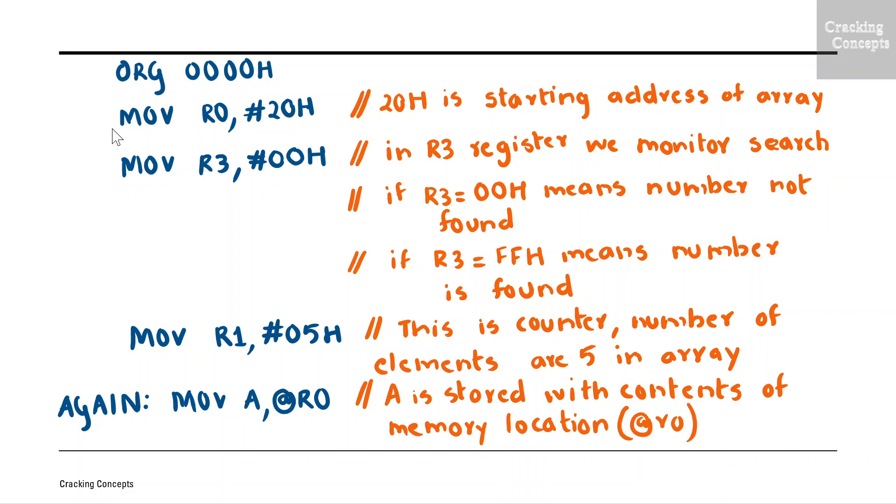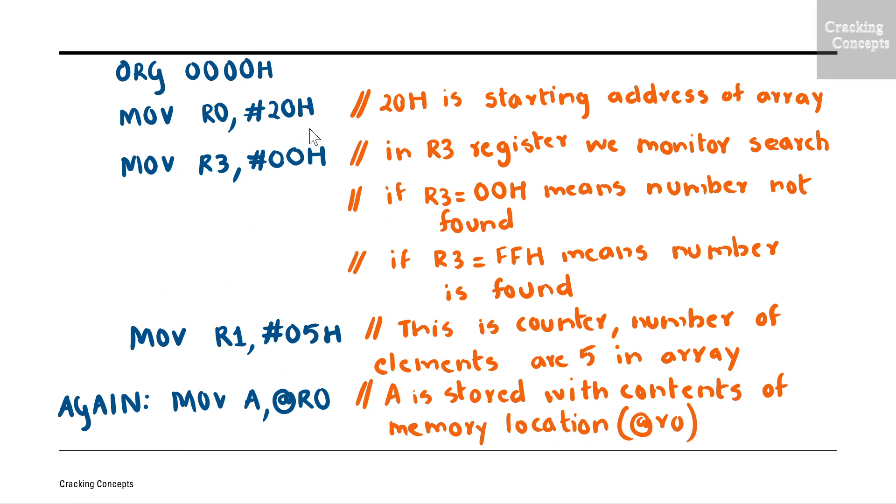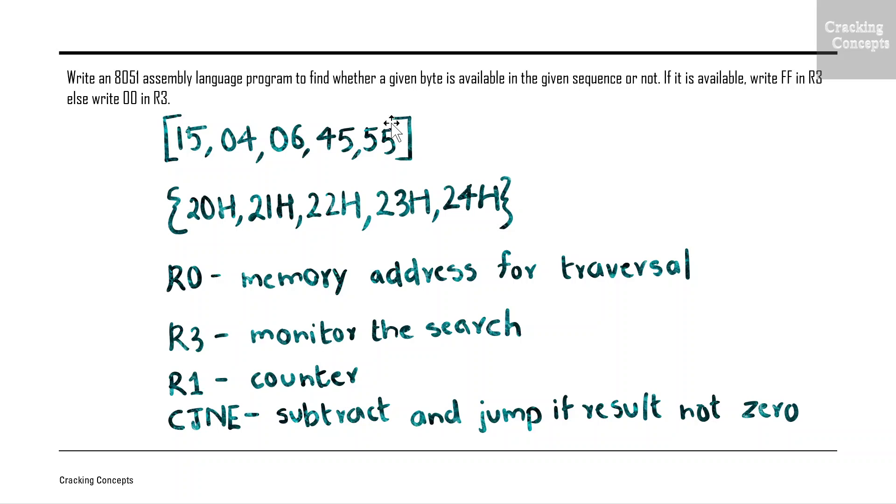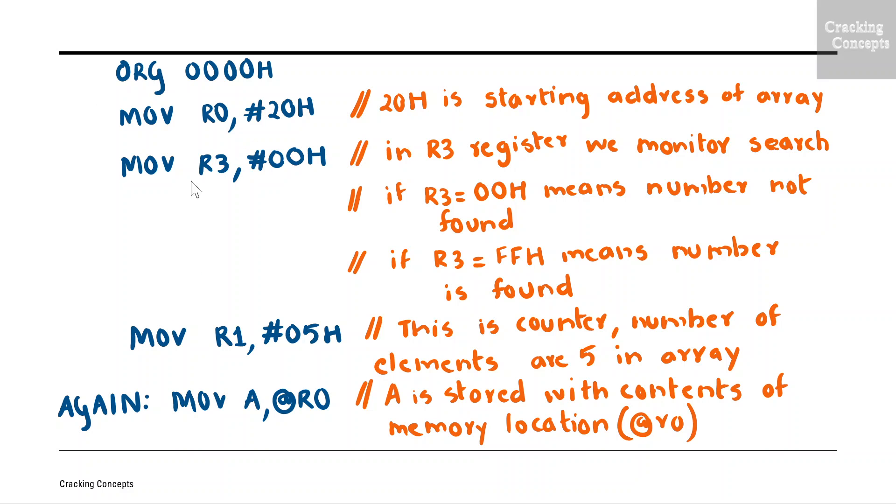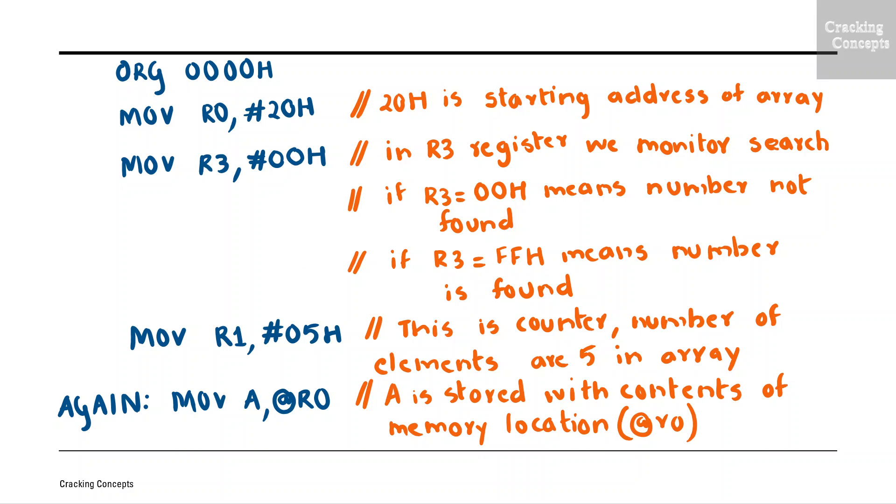Now we will initialize the value of register R0 with the starting address of the sequence which is 20H. So the statement is written as MOV R0, hash 20H. Hash is used to show that the value is directly specified in this statement. Next we will initialize the value of R3, hash 0000H. Next we will initialize the counter. Since the sequence has 5 bytes, we will give it as 5 for R1. So it is written as MOV R1, hash 05H.